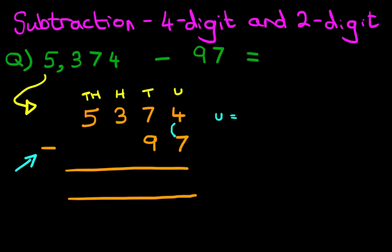So we've got the units, 4 minus 7. Now 4 minus 7 is something we can't do because the number 4 is smaller than the number 7. Don't forget, this is the sign for smaller. So we can't do this.